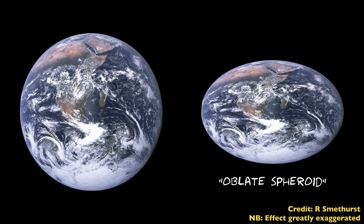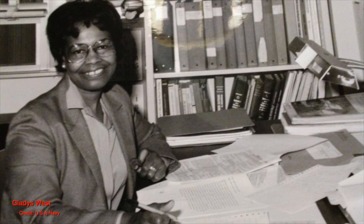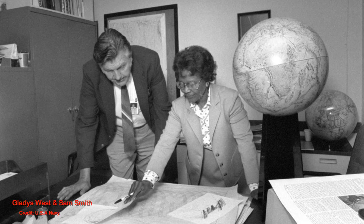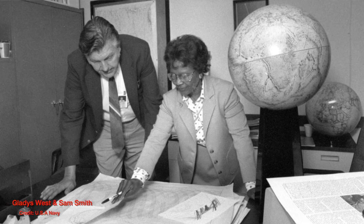Earth is not a perfect sphere — it bulges at the equator slightly, so measurements of circumference and radius will be ever so slightly different depending on where you are on the Earth's surface. At the equator, the Earth is actually 42 kilometers wider than at the poles. We know that now thanks to the work of Gladys West through the seventies and eighties. She worked with satellite data giving the altitude above Earth's surface to completely map Earth's shape, coming up with the oblate spheroid model, which she programmed an IBM computer to model. All of her work essentially formed the basis for GPS that we all use today.